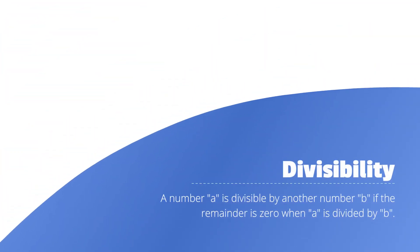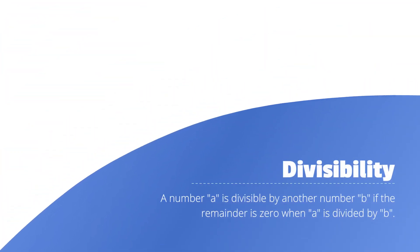First, let's define divisibility. A number A is divisible by another number B if the remainder is 0 when A is divided by B.